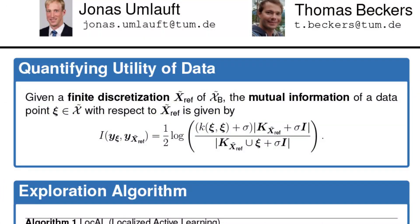In this work, we measure utility of a data point as the mutual information between a finite discretization of the region of interest x_ref and the data point. The covariance between points is computed using the Gaussian process model.